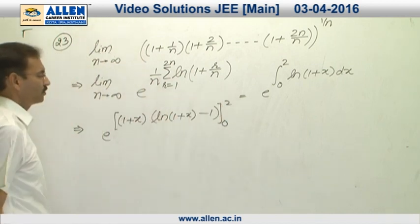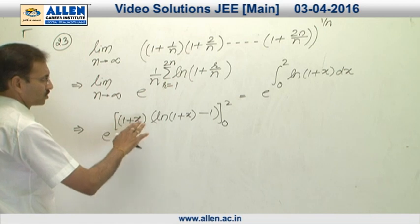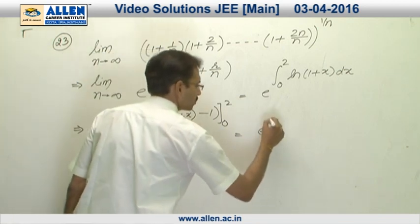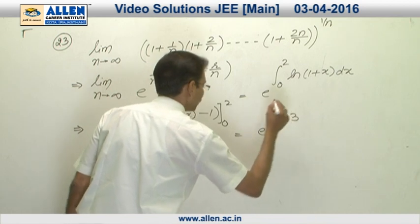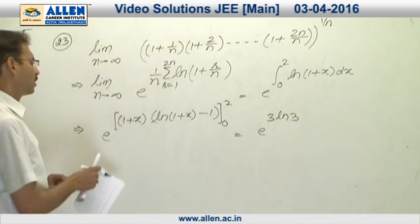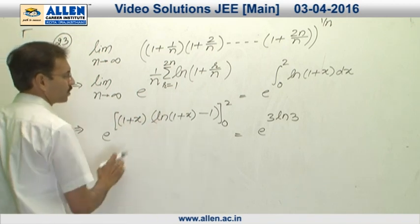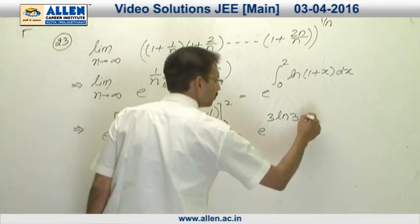This is all power of e. Now, by 2 it is 3 ln 3 e raise to the power 3 ln 3. This is for 1 plus x ln 1 plus x. And for the 1 plus x part, it will become 3 minus 1, 2.